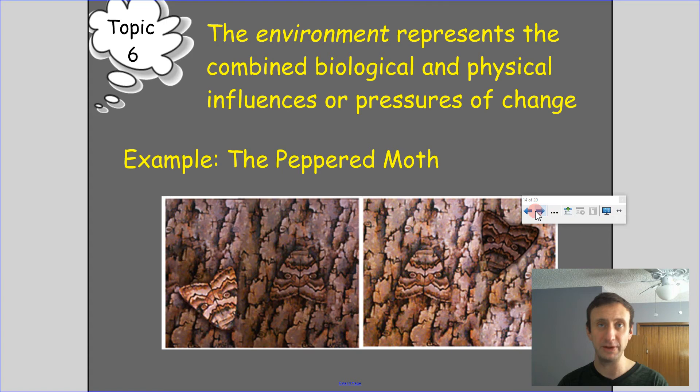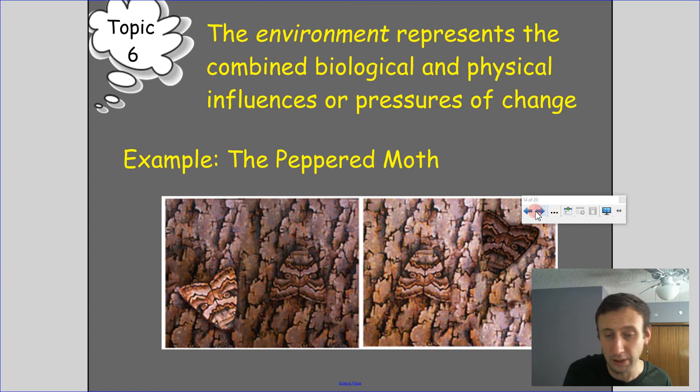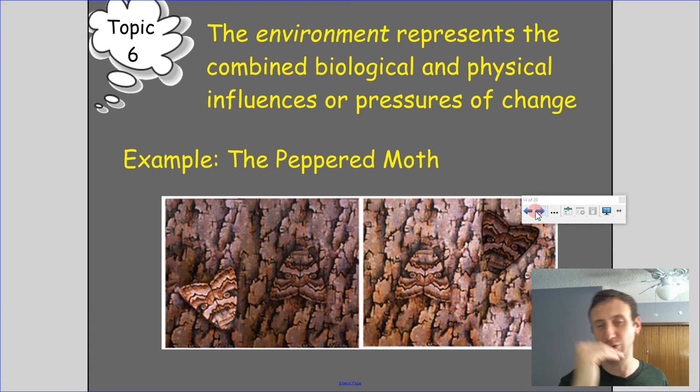The white moths showed up in high contrast to the dark wood and were eaten by birds. But some moths ended up having a mutation that gave them darker wings, which were more camouflaged by the coal-darkened bark. As a result, those darker moths survived more, and over time the peppered moth got darker and darker in color because the darker color was more adapted to survive and pass on its traits to offspring.